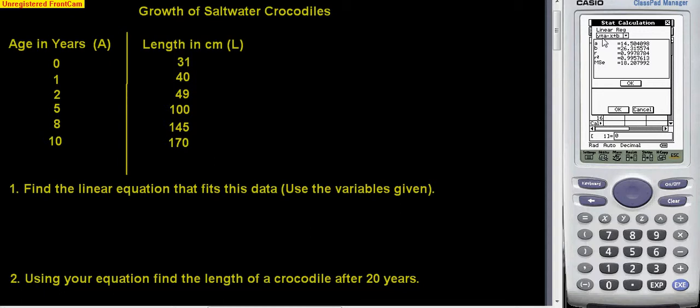It gives the answer in the form y equals ax plus b, where a is 14.5 and all that lot, and b is 26.31 and the rest of that. Let's just write that down.